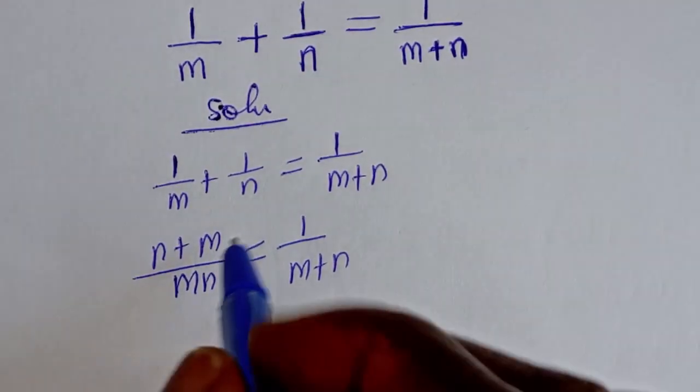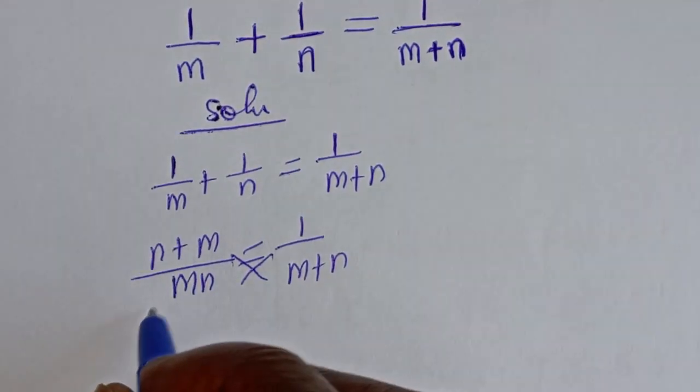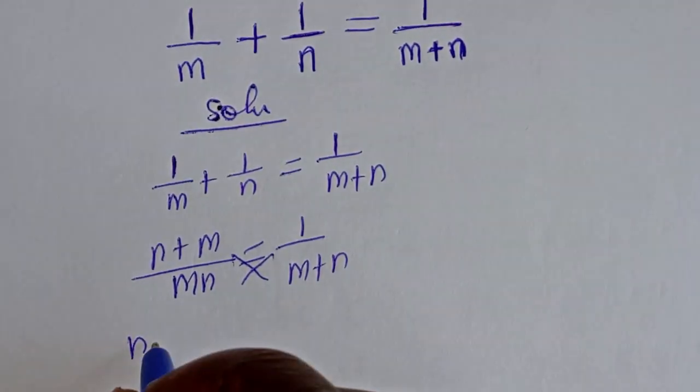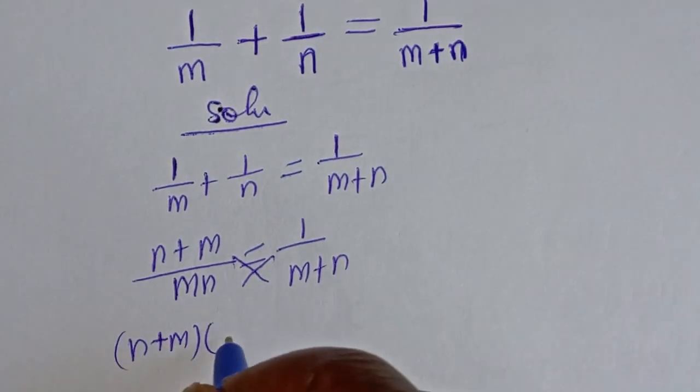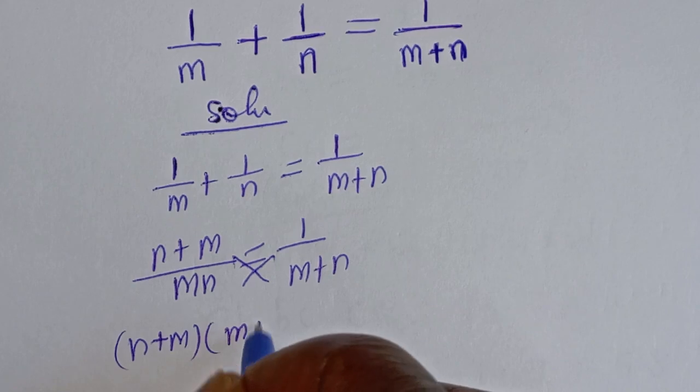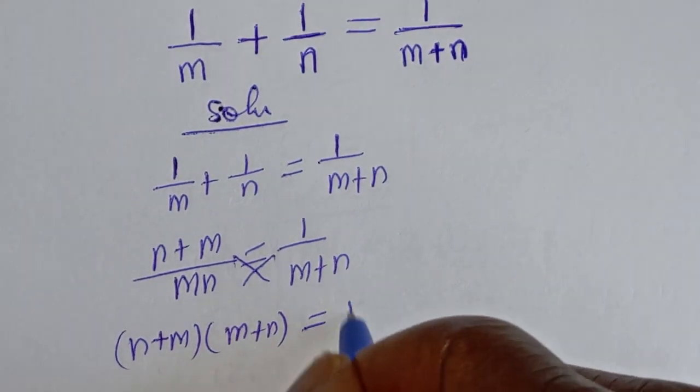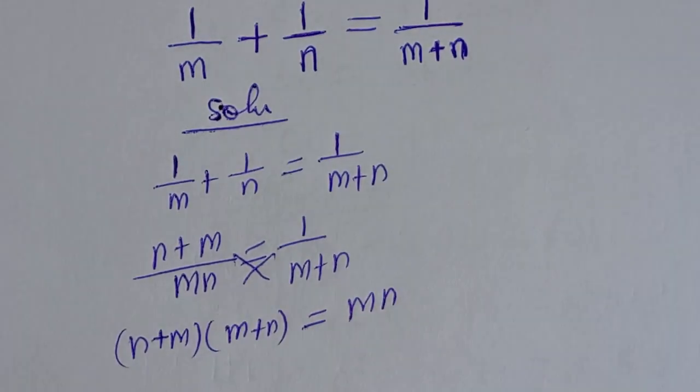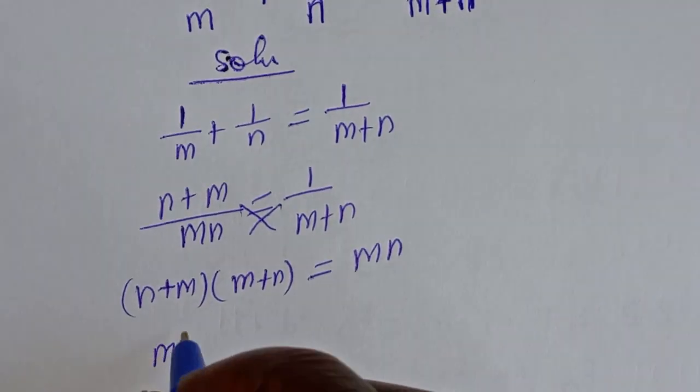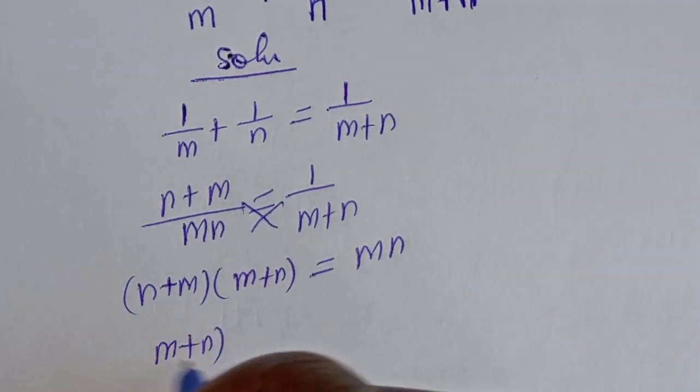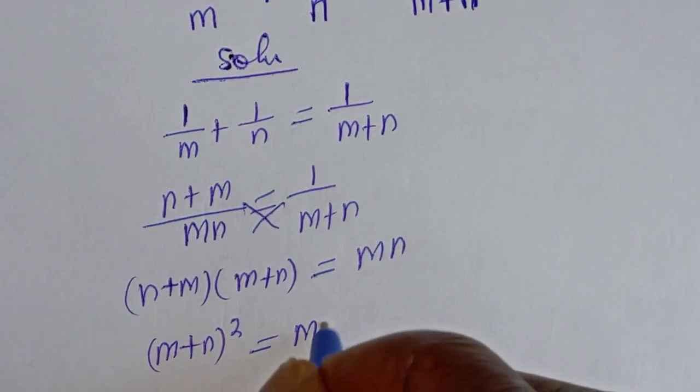Now from here, we can cross multiply. If you cross multiply, we have n plus m brackets, m plus n is equal to mn. Then this is m plus n square is equal to mn.